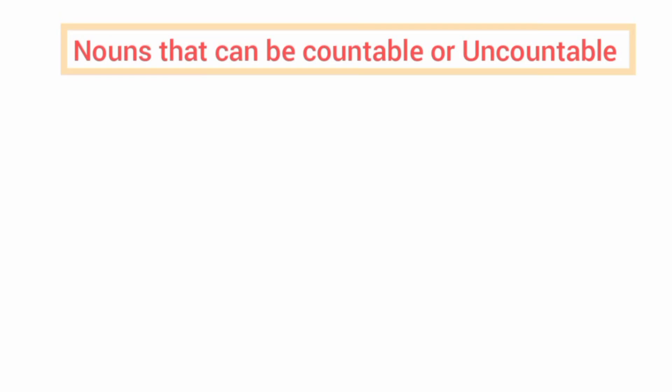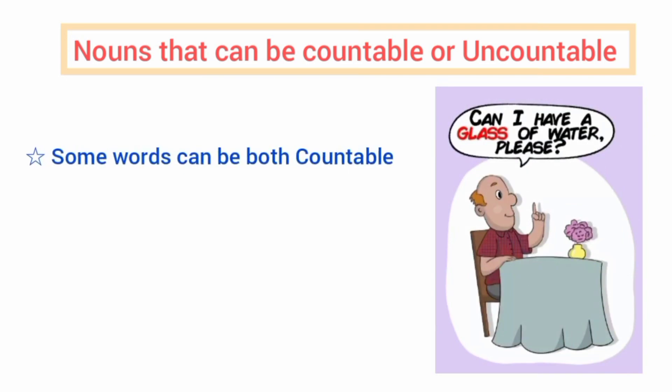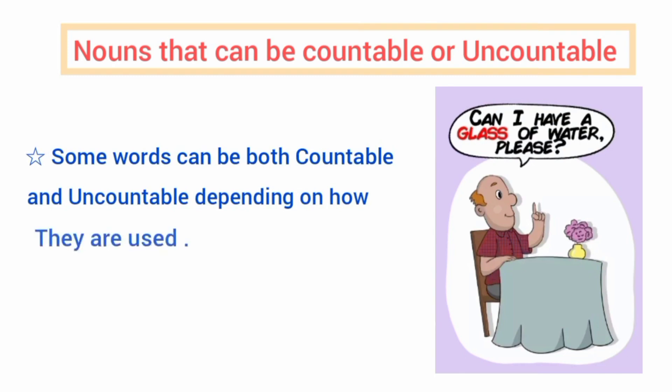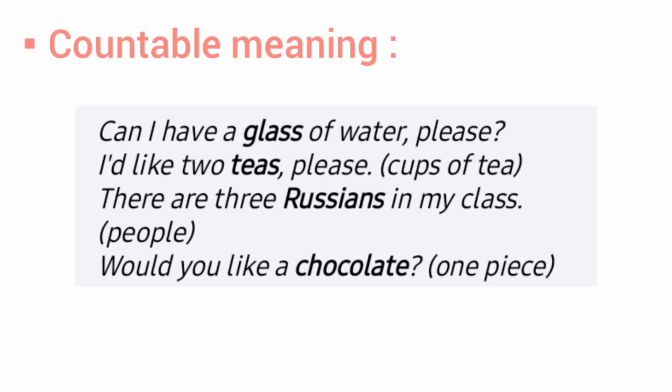Nouns that can be both countable and uncountable. Some words can be both countable and uncountable depending on how they are used in the sentence. Countable meaning — look at these examples: 'Can I have a glass of water please?', 'I'd like two teas please' (cup of tea), 'There are three Russians in my class,' and 'Would you like a chocolate?' — note that chocolate is one of the uncountable nouns, but here it is used as countable.